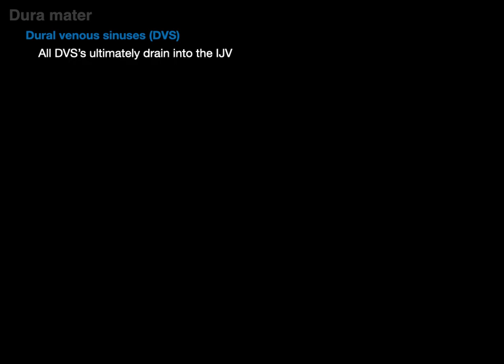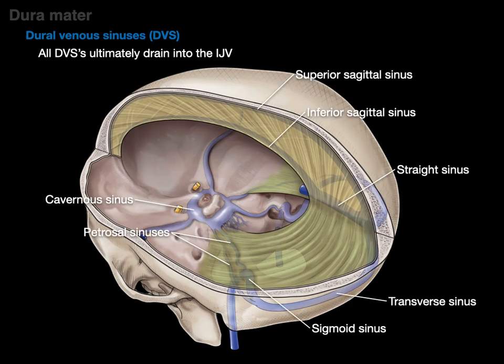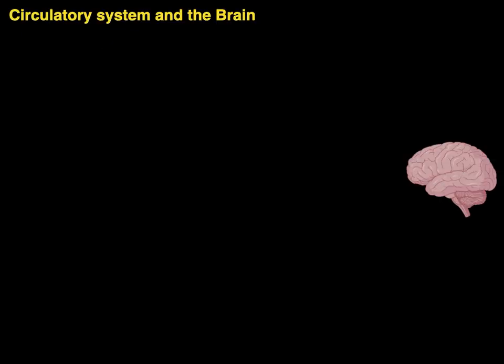All dural venous sinuses ultimately drain into the internal jugular vein. Here's that picture — all of those dural venous sinuses ultimately drain into the internal jugular vein. That brings us to the circulatory system in the brain.